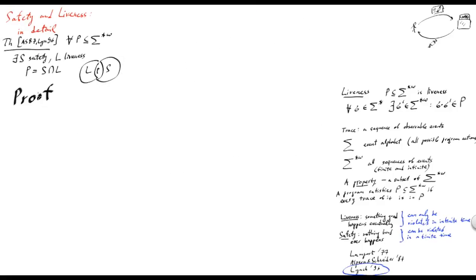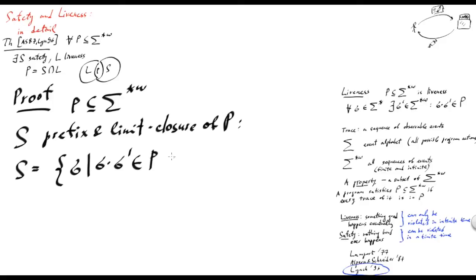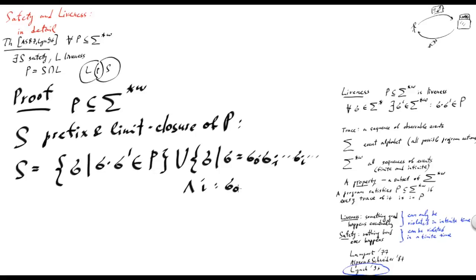How do we prove this theorem? We prove it by construction. We start with the property and we construct the matching safety property. In fact, we construct it as the prefix and limit closure of P, defined as follows: it is the set of all prefixes of elements of P, union with the set of all limits of converging sequences of traces in P.